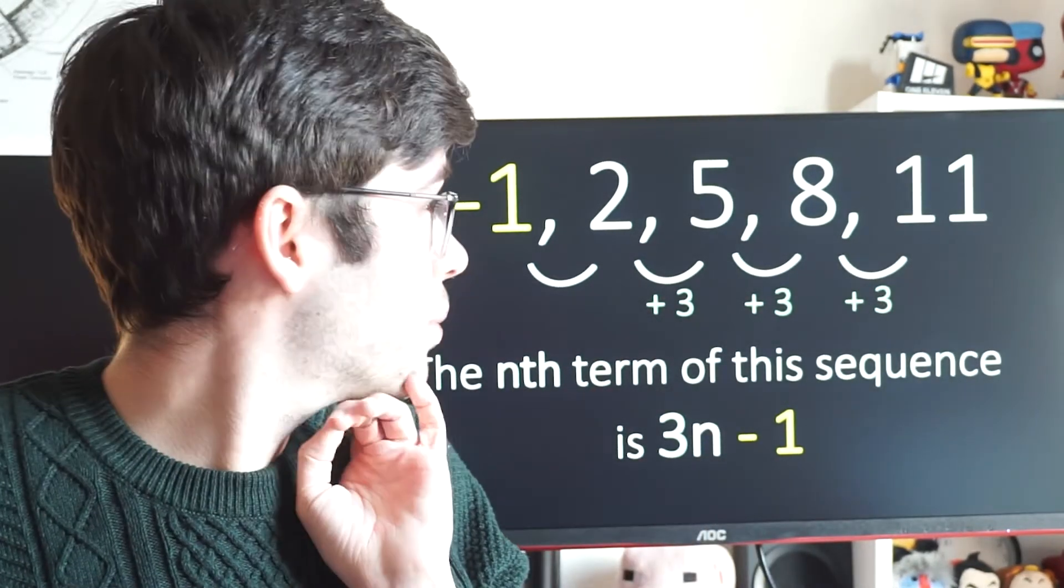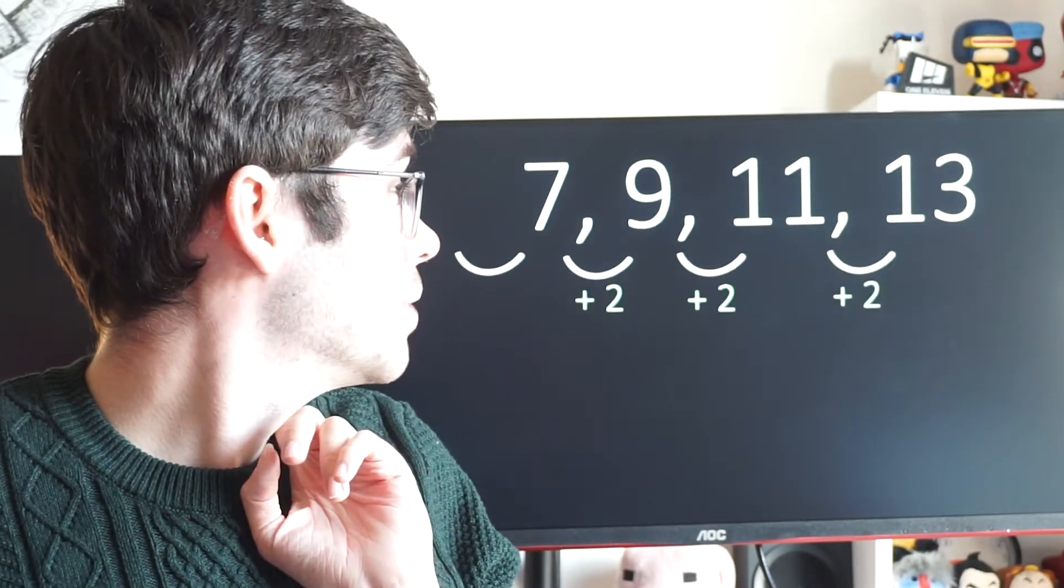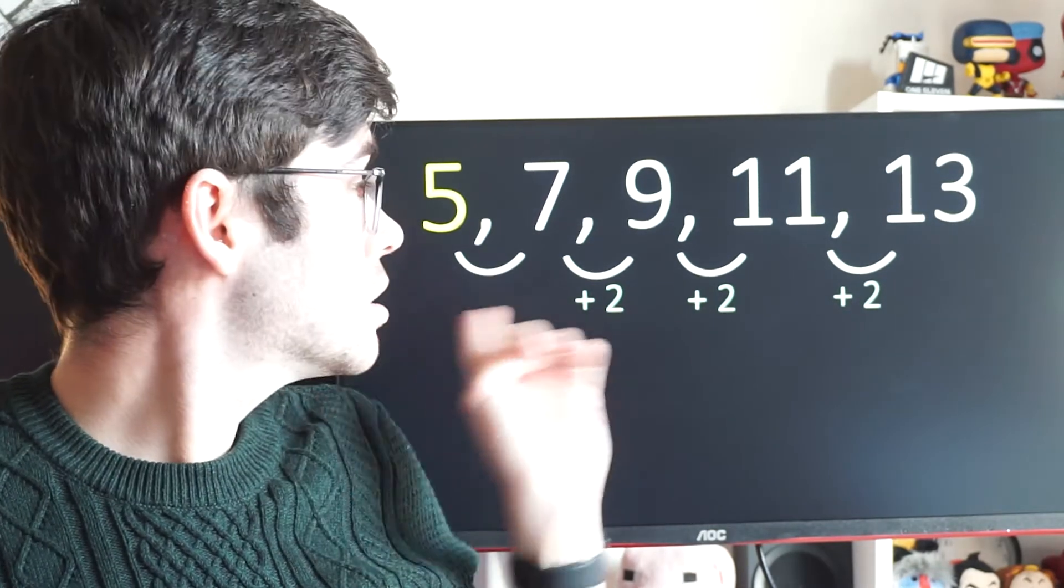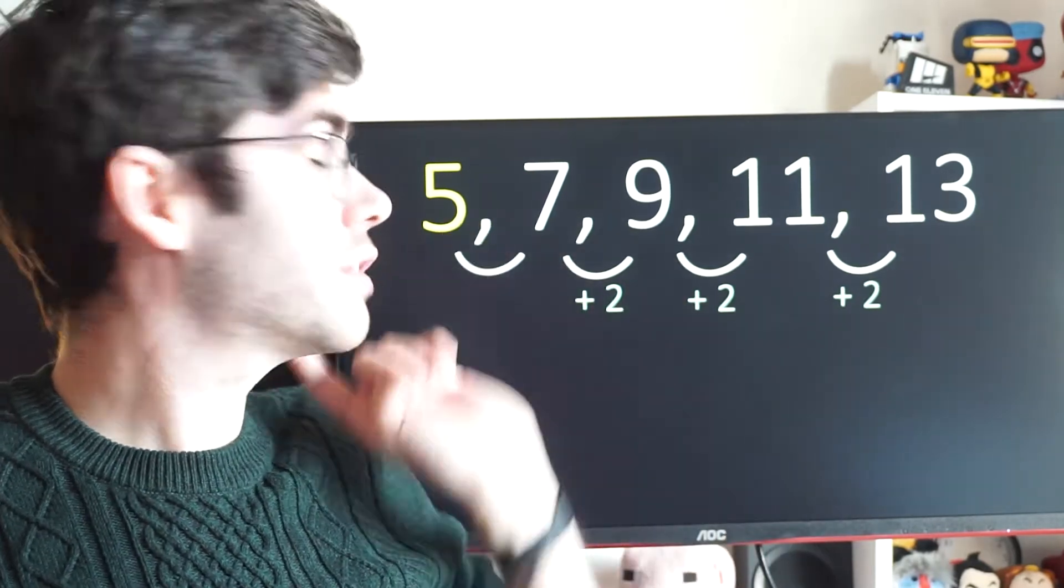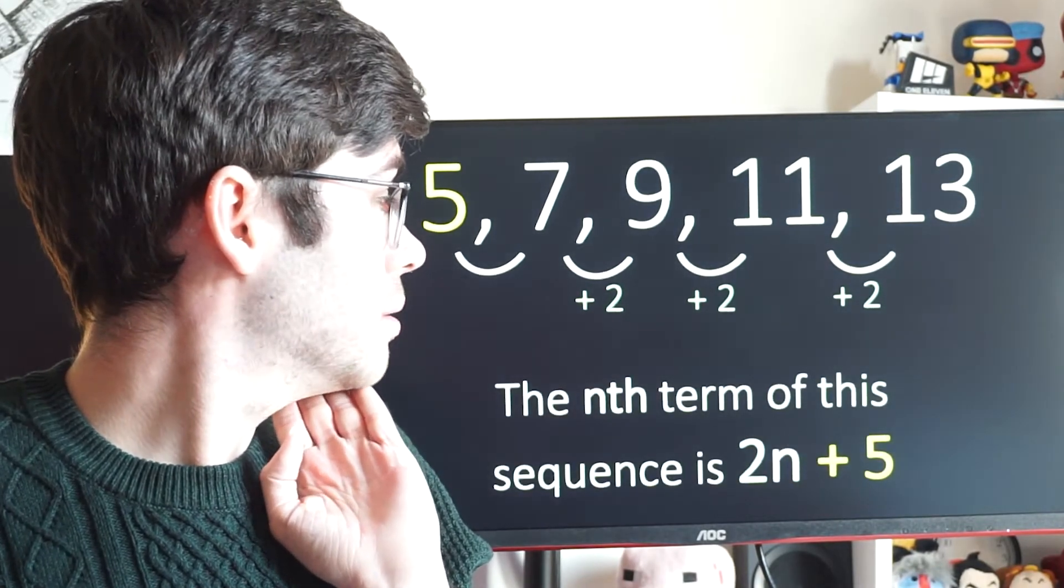Let's have a practice of that with another sequence. So what's happening this time? Well, it's going up by 2 on each one, and the previous term would have been 5 if we take away 2. So using this information, 2 goes in front of the n, and positive 5 goes on the end. So our nth term here is going to be 2n plus 5.